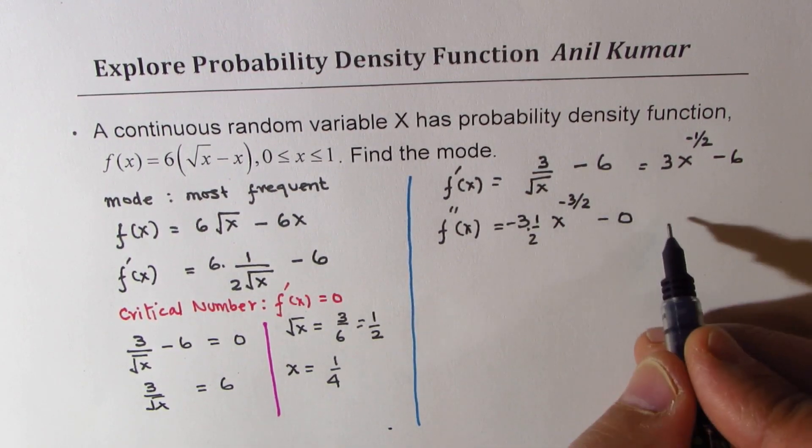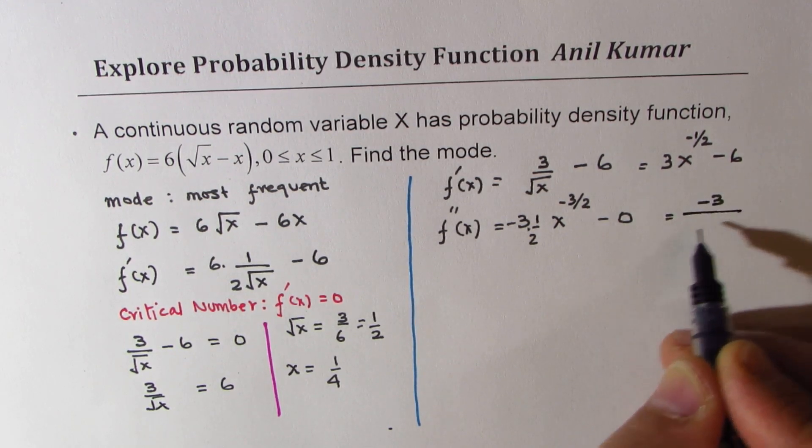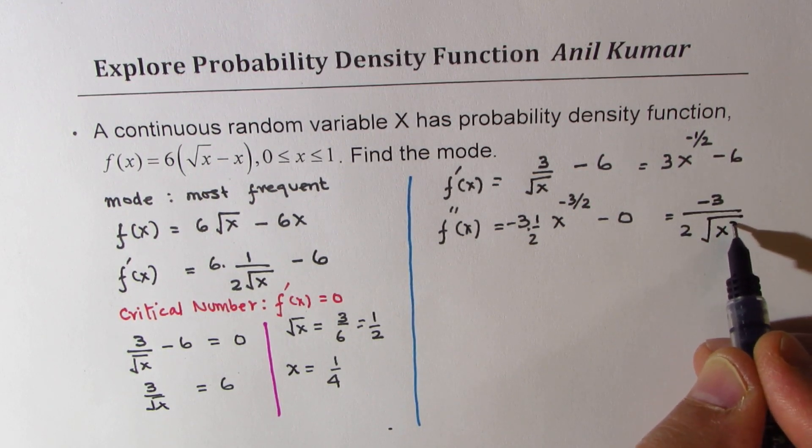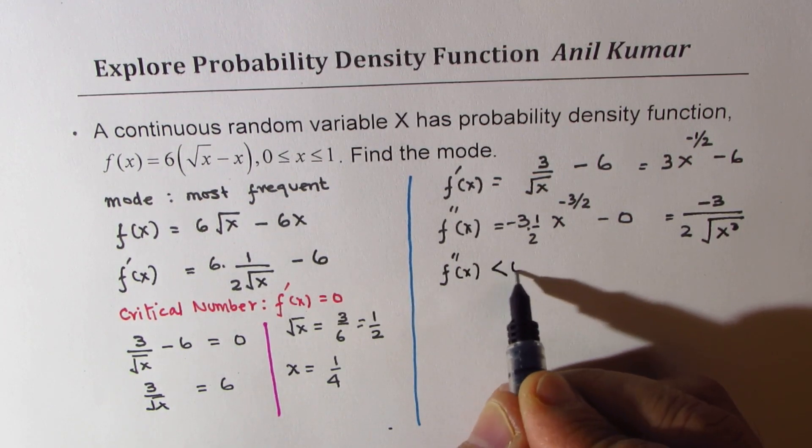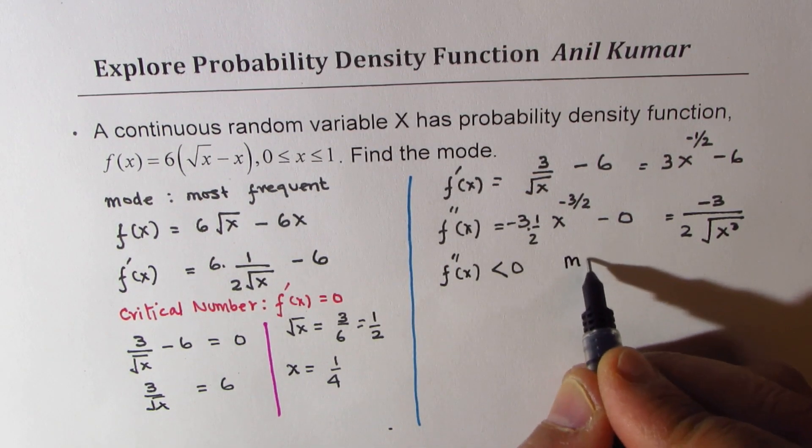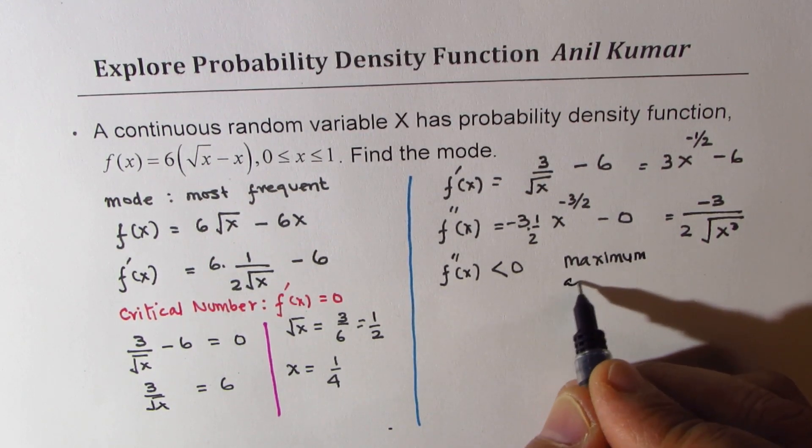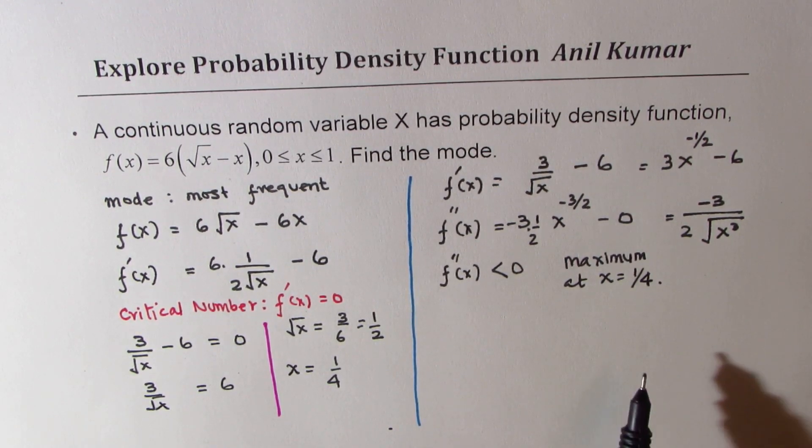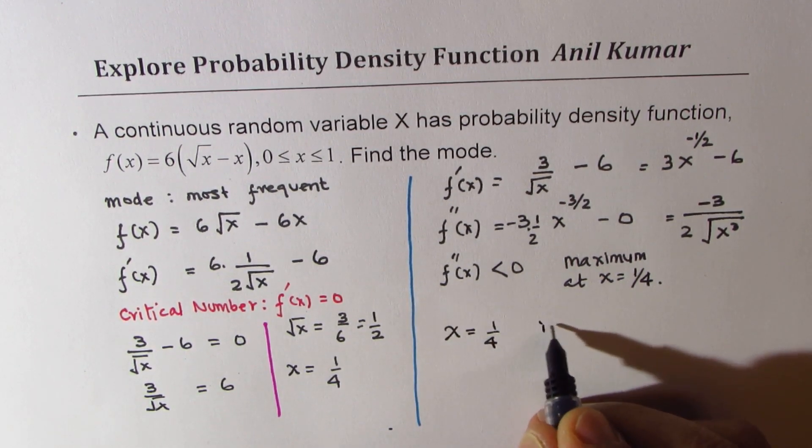We have negative 3 over 2x cubed. Since the second derivative is less than 0, we have maximum at x equals 1 over 4. So x equals 1/4 is the mode.